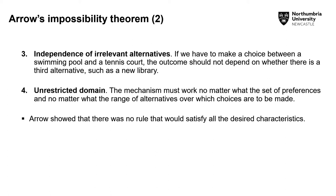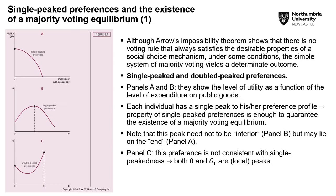These are the characteristics of an ideal system. What Arrow goes on to show — and that is why it's called Arrow's impossibility theorem — is that there is no rule that would satisfy all desired characteristics. No voting system would comply with all four rules. For example, under a rank order voting system, individuals rank alternatives and the ranks assigned are added together, with the lowest score winning. But that ranking would still be impacted by irrelevant alternatives, violating one of the conditions. Arrow proposes there is no voting rule that satisfies all desirable properties of a social choice mechanism.